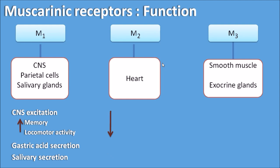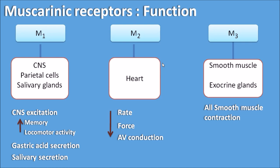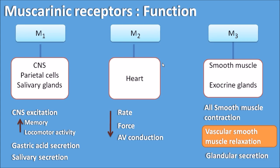M2 receptors are present on the heart and are inhibitory in nature, thereby inhibiting the cardiac system: they decrease the rate of contraction, the force of contraction, and the atrioventricular conduction. M3 receptors are present on smooth muscle, and all smooth muscles are contracted since M3 receptors are excitatory, with the exception of vascular smooth muscle. Vascular smooth muscle is relaxed not by acetylcholine but by the mediator nitric oxide released from the endothelium. Glands are also secreted via M3 receptors.